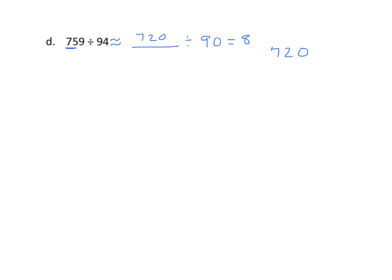So we are going to try 8 for our quotient. We'll go to our original problem, 759, in the tableau, our divisor outside. And I'll try 94 times 8. 32, regroup the 3. 8 times 9 is 72, plus 3 is 75. Good. I knew it was going to be close.